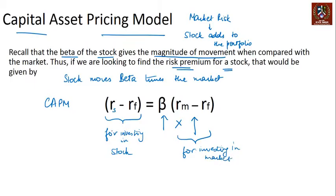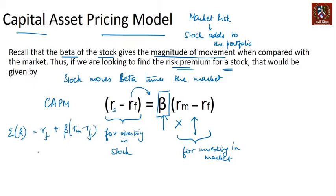The risk premium demanded for investing in the stock is beta times what you demand for investing in the market — that is what the Capital Asset Pricing Model says. This means the expected return on the stock equals the risk-free rate plus beta times (RM minus RF), where RM is the market return. That's our CAPM calculation.